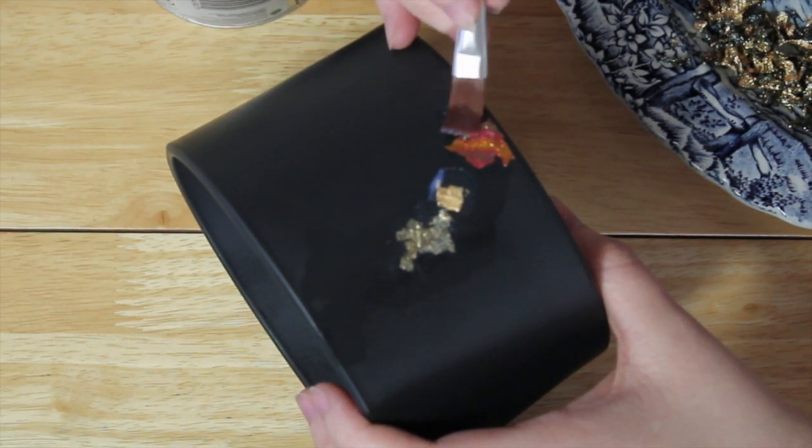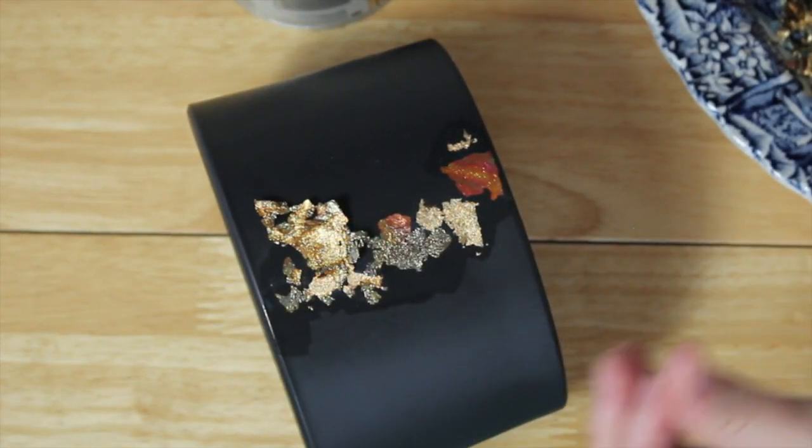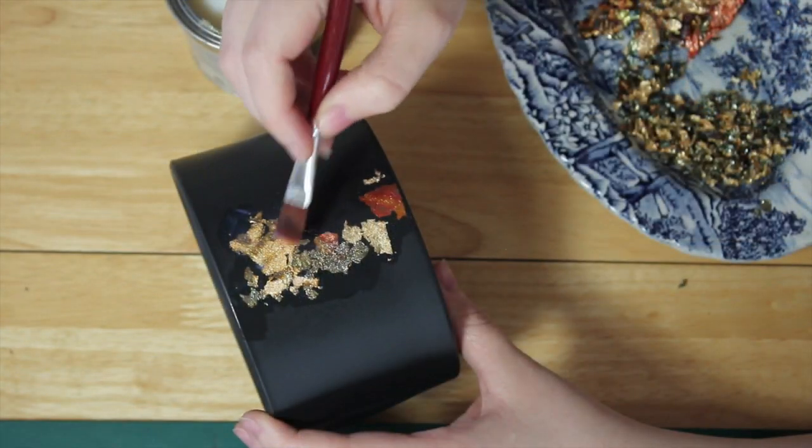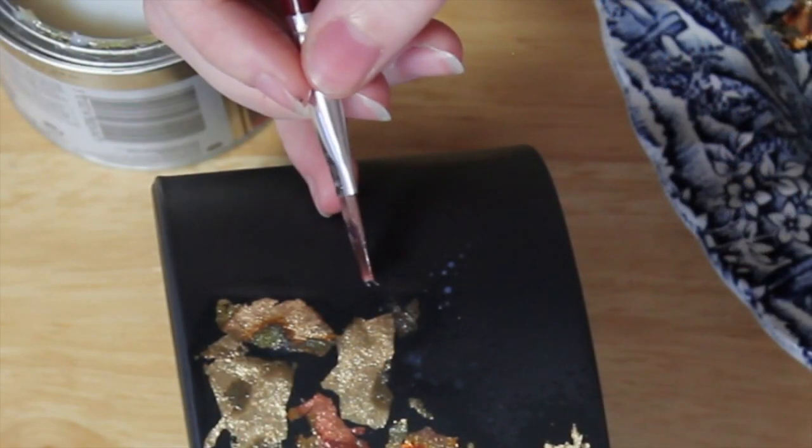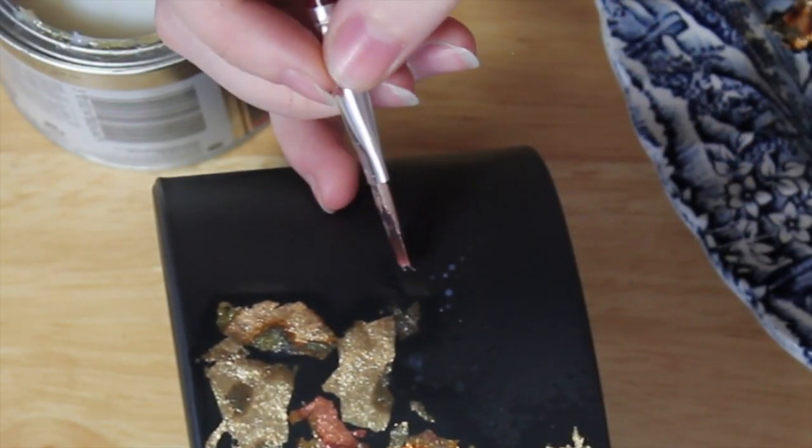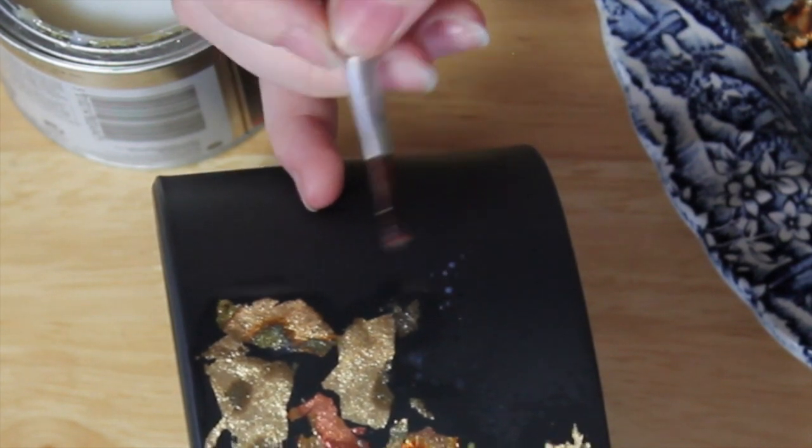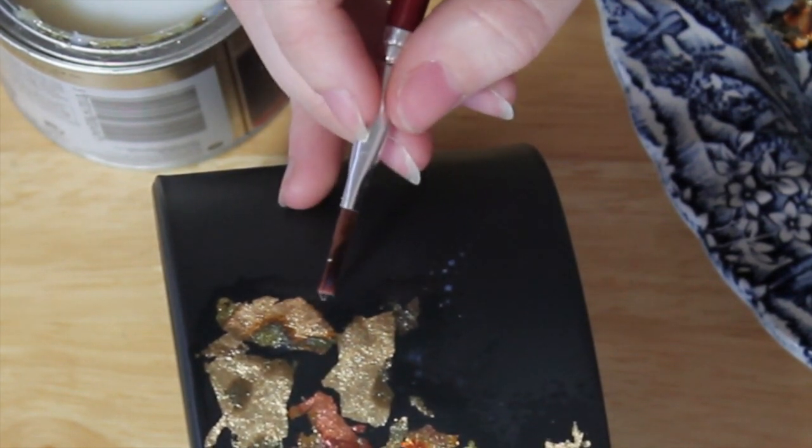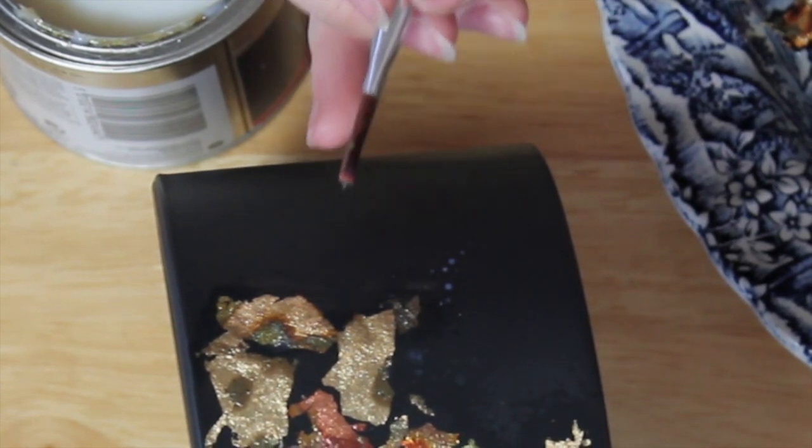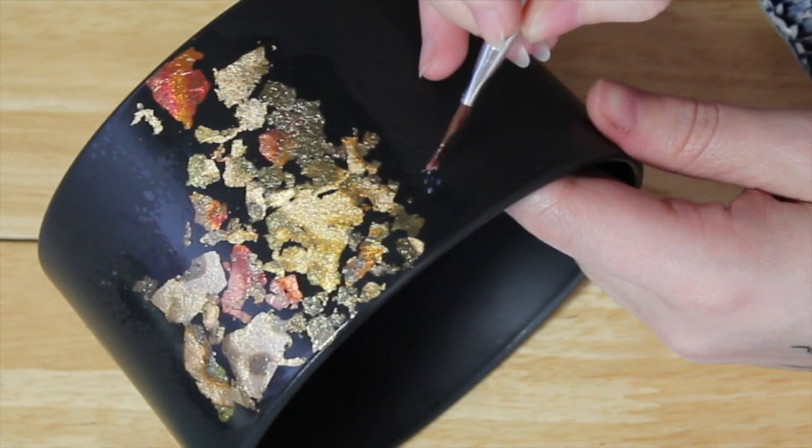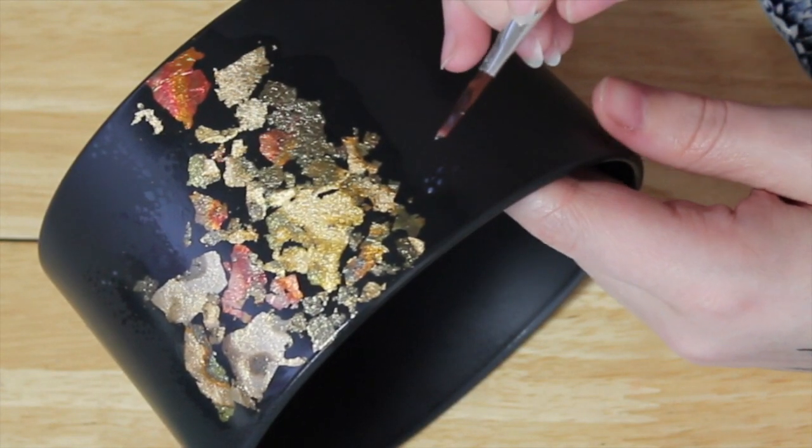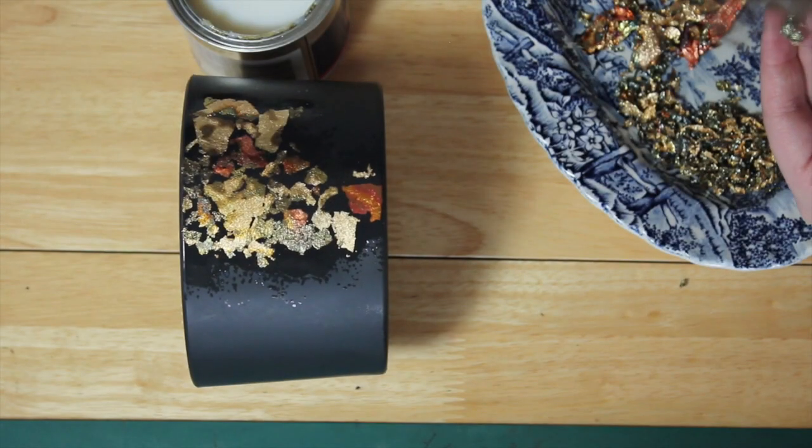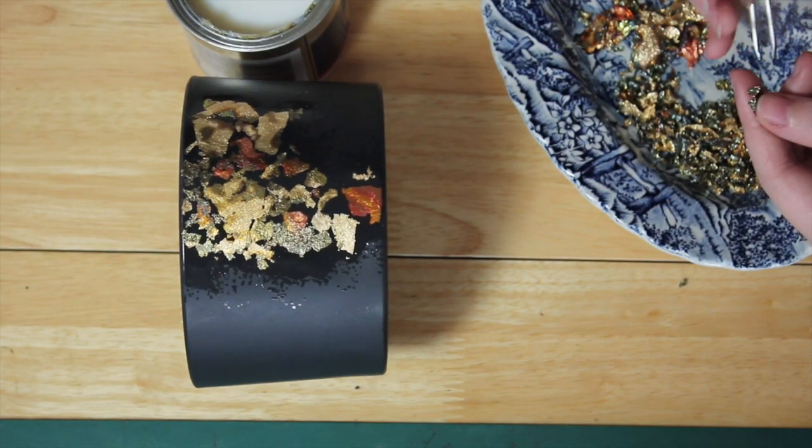I'm going to be applying the gilding flakes in patches, but then around it, just so there isn't a harsh line, I'm going to do these tiny little dots. It's the kind of thing that will only really catch when you move it in the light, but it looks so much prettier than just having a really rough jagged edge.